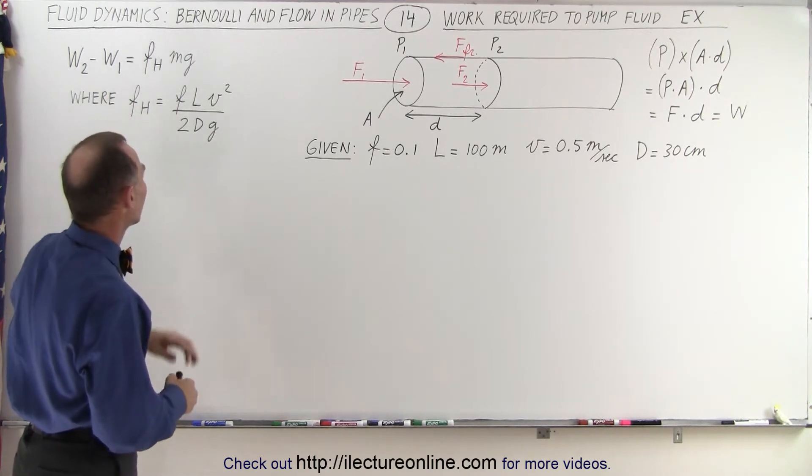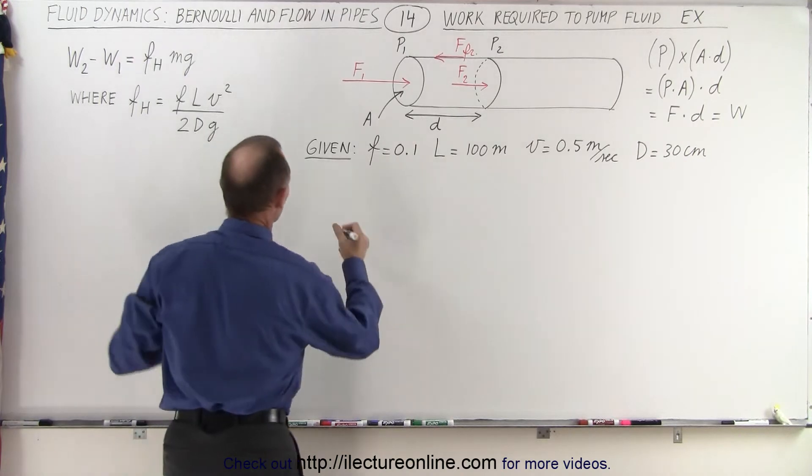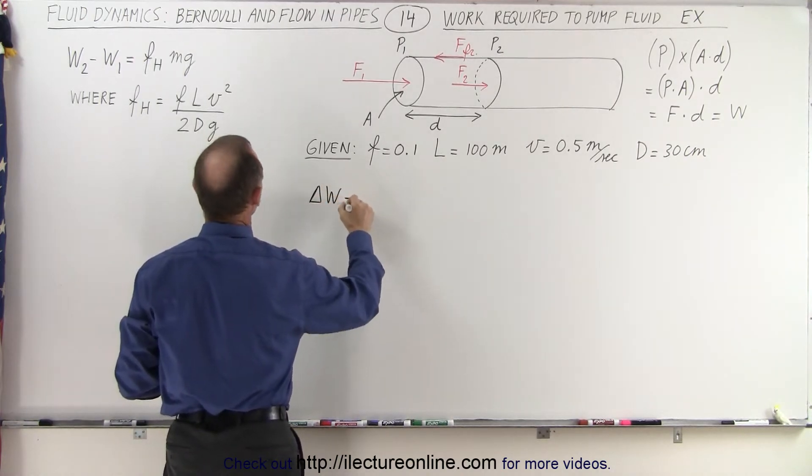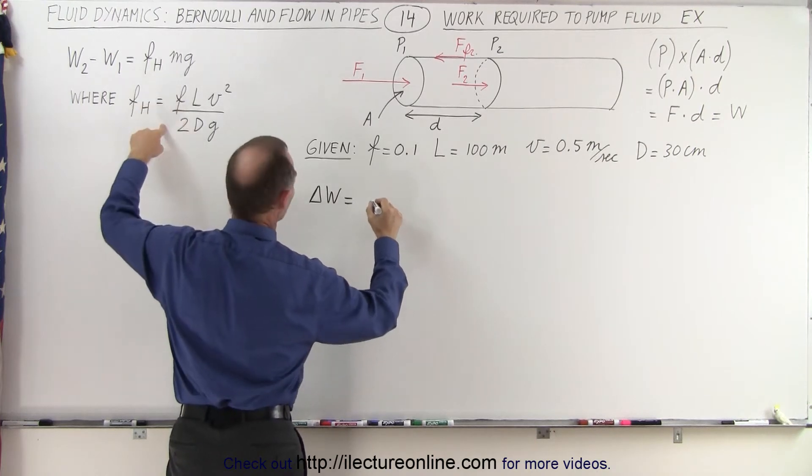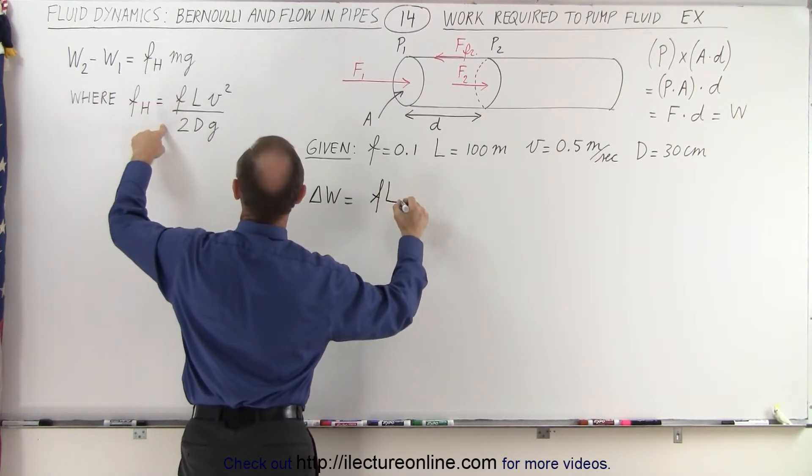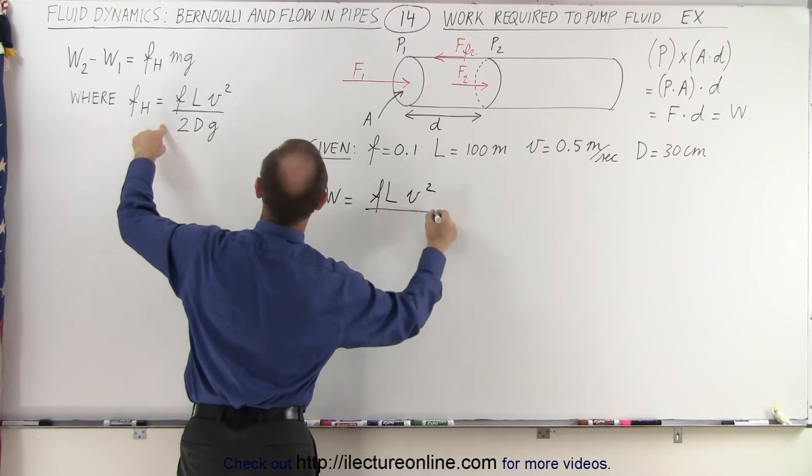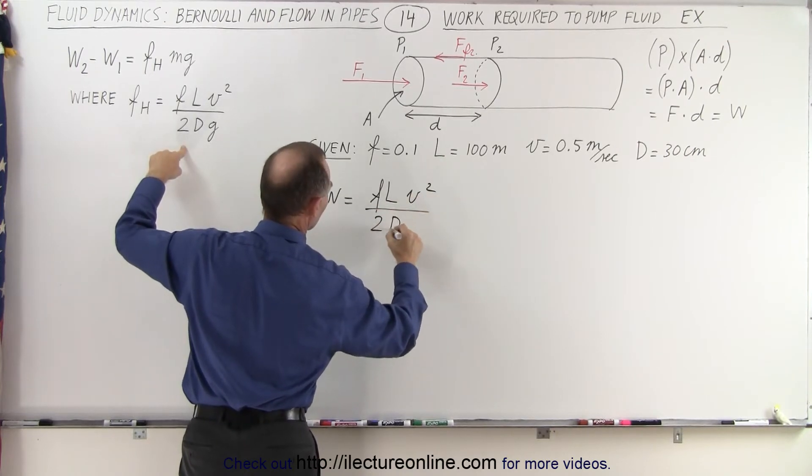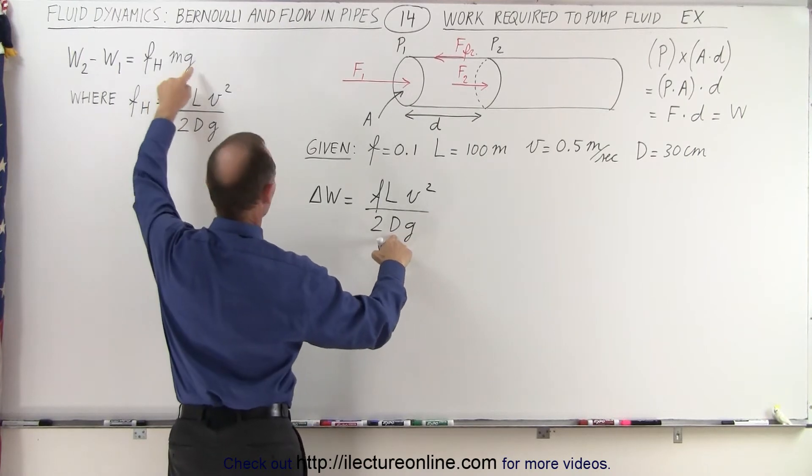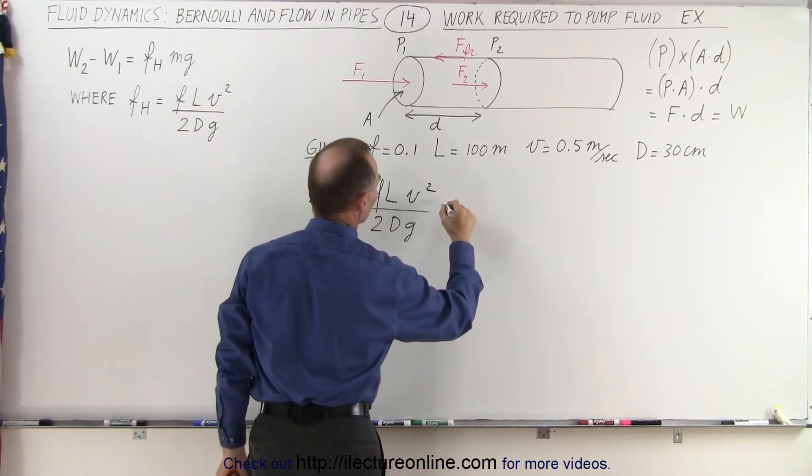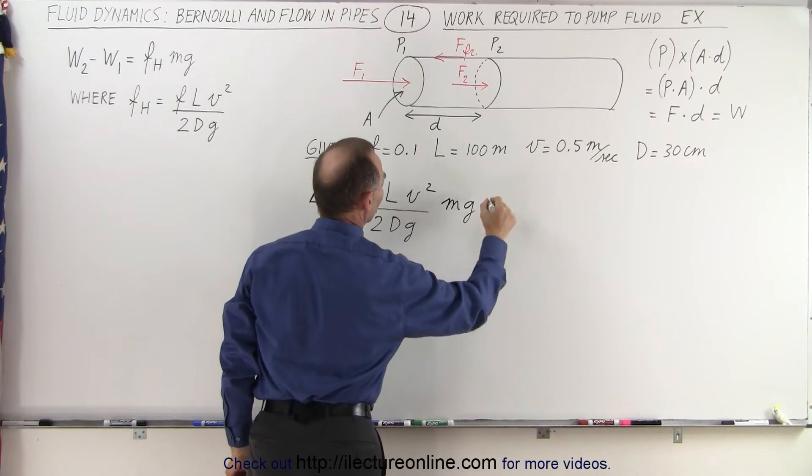Let's go ahead and now write down the equation. So the amount of work done, the delta W, is going to be equal to F sub H, which is defined over here, F L V squared divided by 2DG. D, of course, being the diameter of the pipe, and we're going to multiply that times the weight of the material, which is going to be the liquid, M times G.